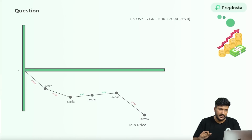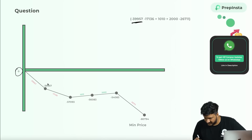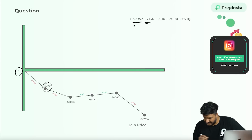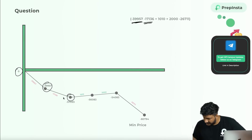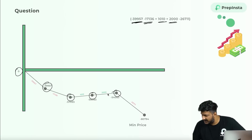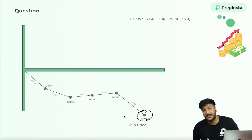Looking at the second example: price starts from zero. First change is minus three, nine, nine, five, seven — price goes to that value. Then minus seven, one, seven, one, three, six — price reduces further. Then plus 1010 makes price come up. Then 2000-something makes it go higher. Then minus two, seven, two, six, seven, one, one brings it down again. So in this case, the best day to buy the stock is actually the day with the most negative cumulative price, even though you saw two positive numbers in between.